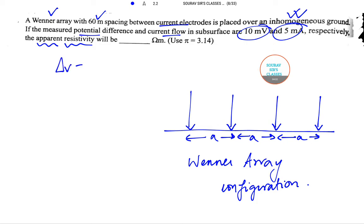Delta V is equal to 10 and I is equal to 5 and A is equal to 20.